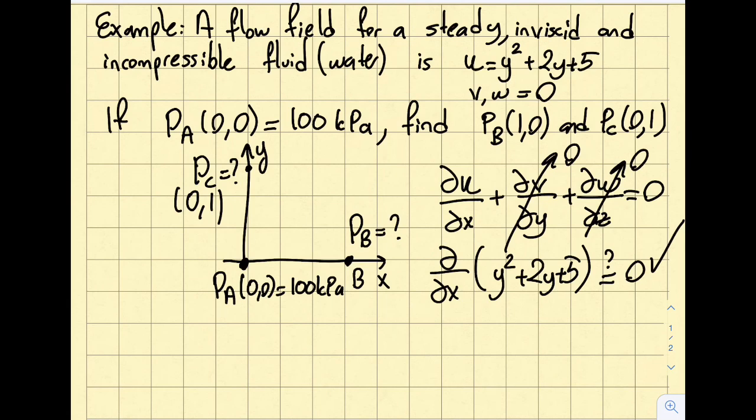Next, I want to check whether this flow is irrotational, because as we discussed, if the flow is irrotational or potential flow, I can simply go ahead and use the Bernoulli's equation between pa and pb, pa and pc, or rather any two points in the flow. So let's establish that.